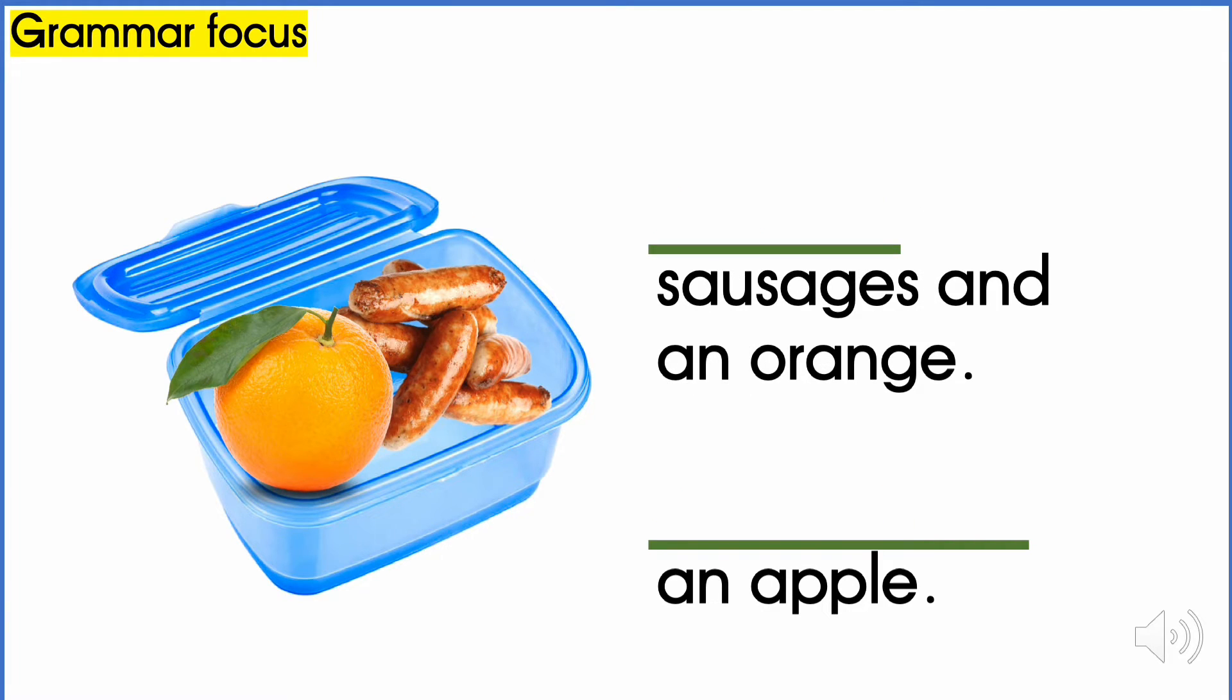Now it's your turn to fill up the blanks. What's the answer for the first one? That's right. I've got sausages and an orange. What about the second line? That's right. I haven't got an apple.